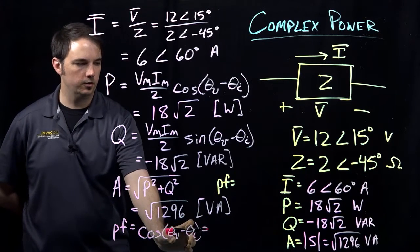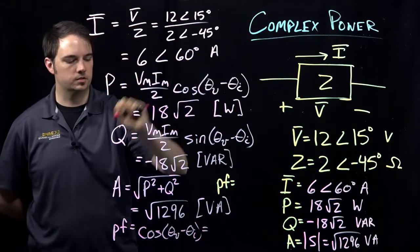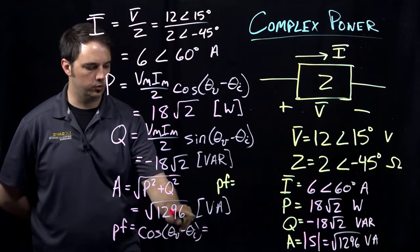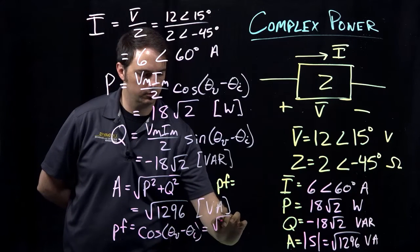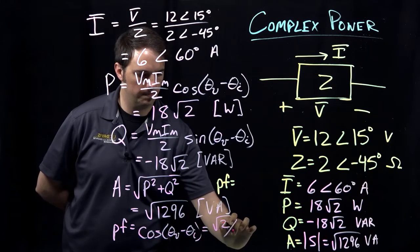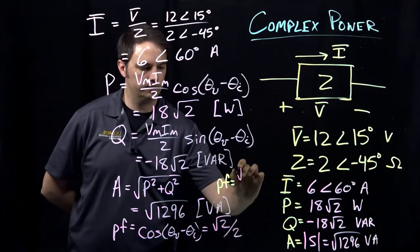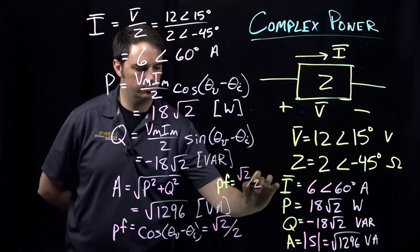So again, here, theta v being 15, and then 60 for theta i. So I'd be working with cosine of negative 45, which will give me a value of root 2 over 2 here for my power factor.